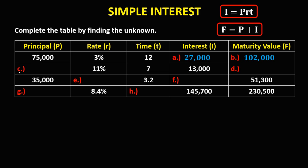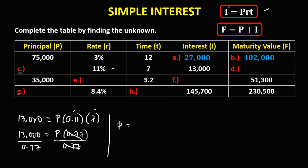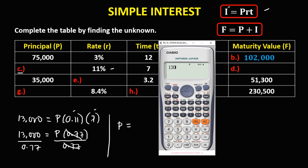To solve for C, since principal is the unknown, we have: interest equals principal times rate times time. The interest is 13,000, the rate is 11%, which in decimal is 0.11, and the time is 7. Simplifying: 13,000 equals principal times 0.77. To solve for the principal, divide both sides by 0.77. Therefore the principal is 13,000 divided by 0.77, which equals 16,883.12.